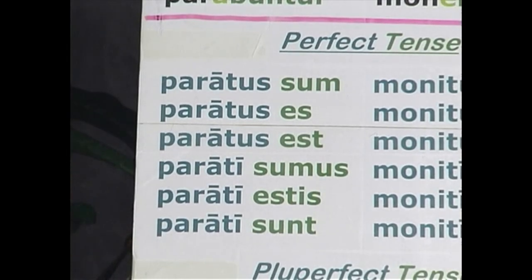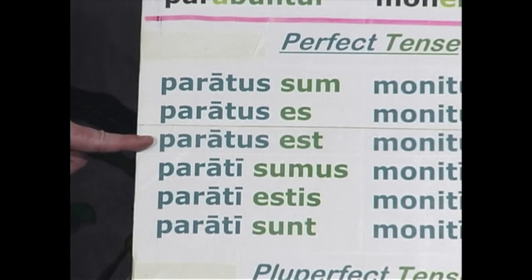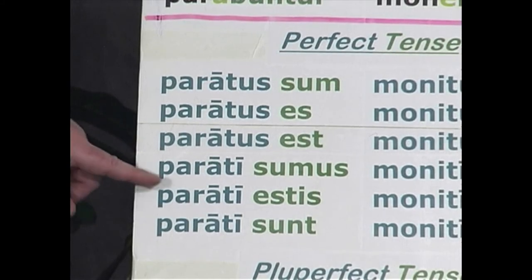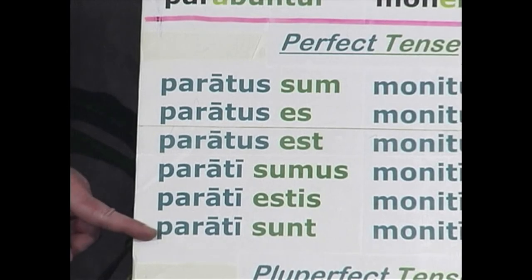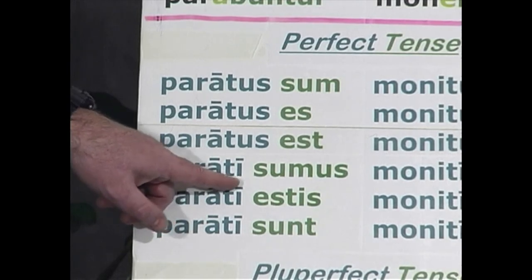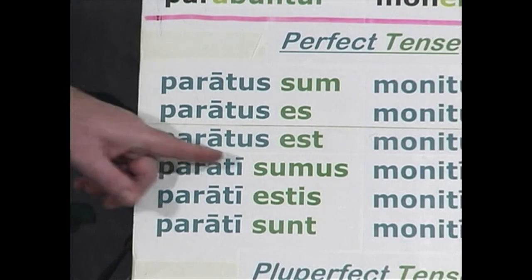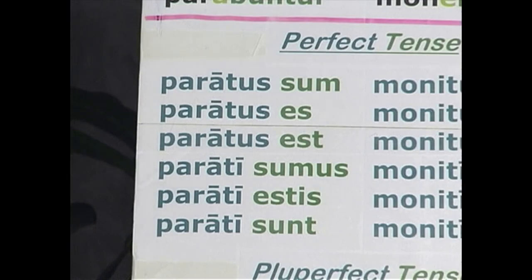Paratus sum, paratus es, paratus est; parati sumus, parati estis, parati sunt. This translates as the perfect passive indicative: I have been prepared, you have been prepared, he has been prepared, we were/have been prepared, you plural, they were/have been prepared. The subject is acted upon. Notice that the participle is converted into the plural for the three plural forms.